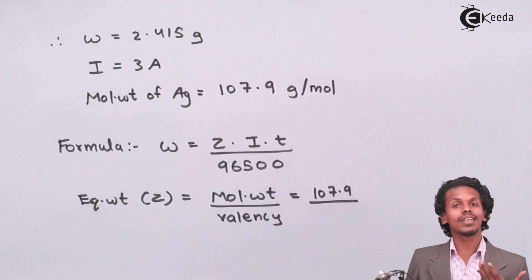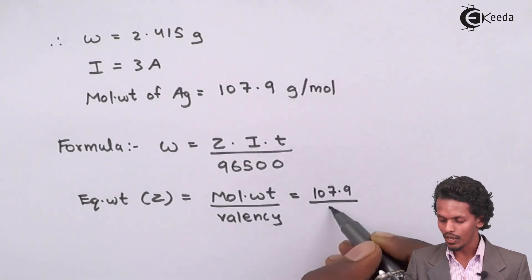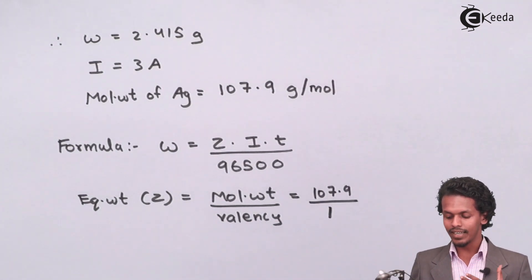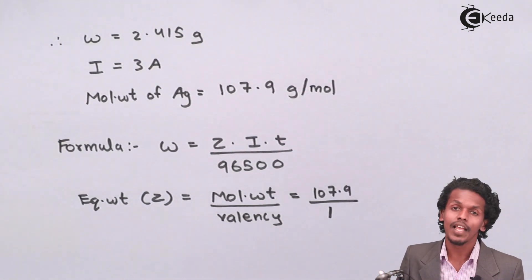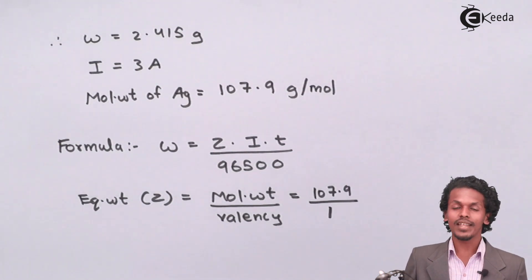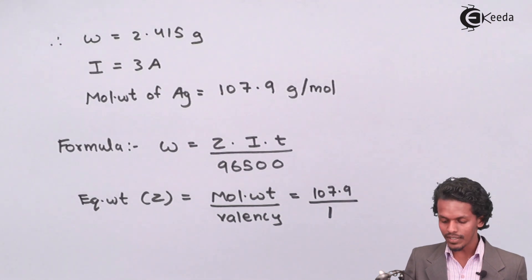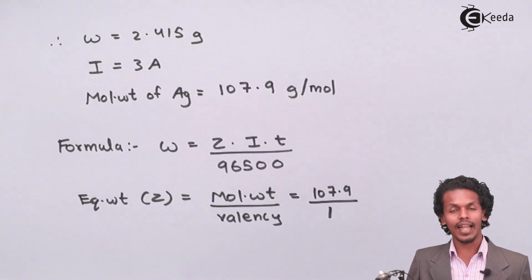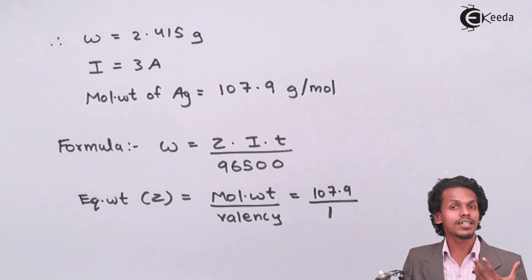The oxidation state of silver is usually +1, so the valency is 1. Therefore Z = 107.9 / 1 = 107.9. Now with the value of Z we can calculate the required time.